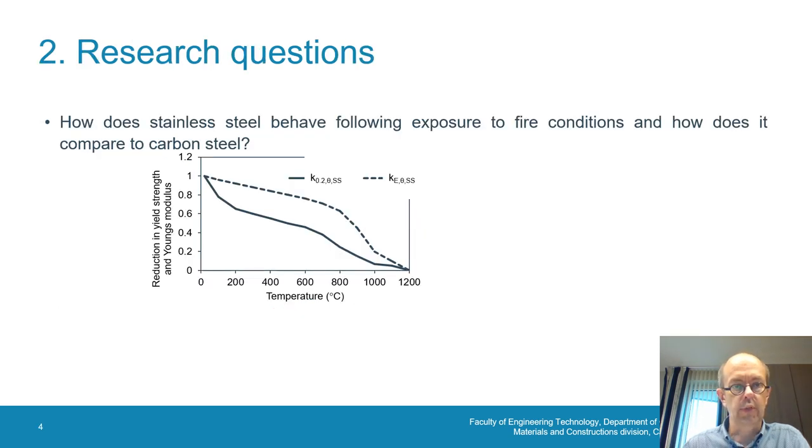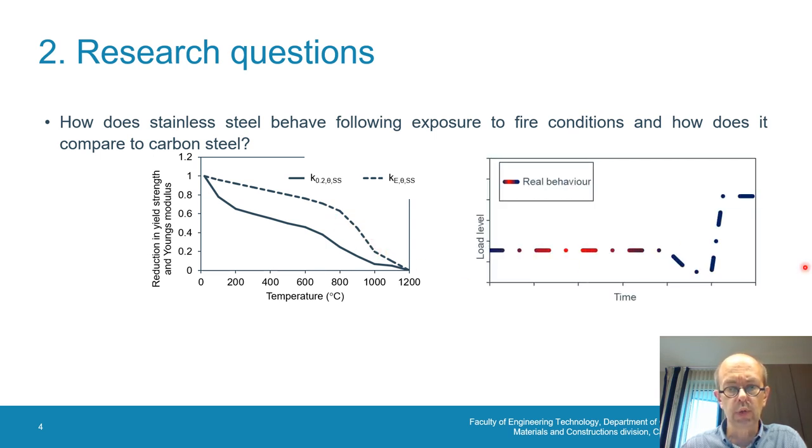Now we come to our research questions. How does stainless steel behave following a fire and compared to carbon steel? We see here in the figure the reduction of material properties, the proof strength of stainless steel and the elastic modulus. If you look into a real fire, then we see the load level is deemed to be reduced, the steel gets hot, which is indicated in red color here, and then is cooling down.